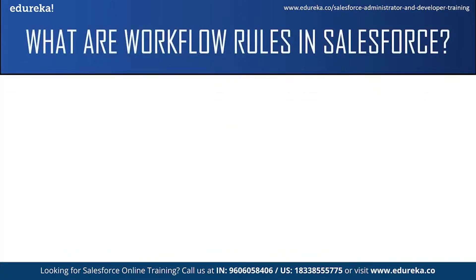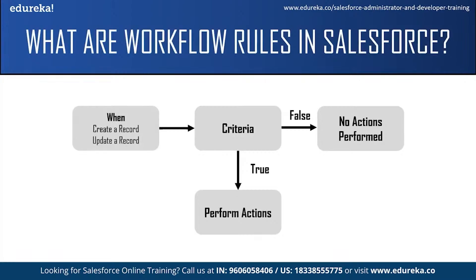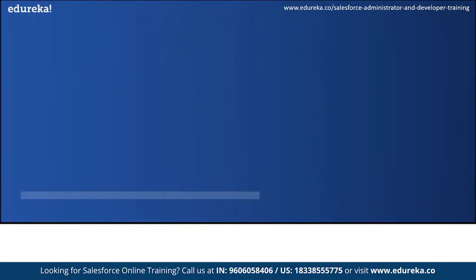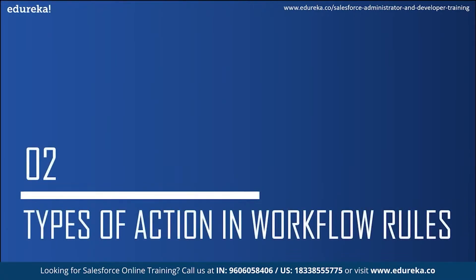Criteria is basically the condition that causes the workflow rules to run. Only if the condition is true are the actions automatically performed. If the condition is false, the workflow rule does not apply. Actions are automatic tasks which are performed after the criteria is met or when the condition is true.